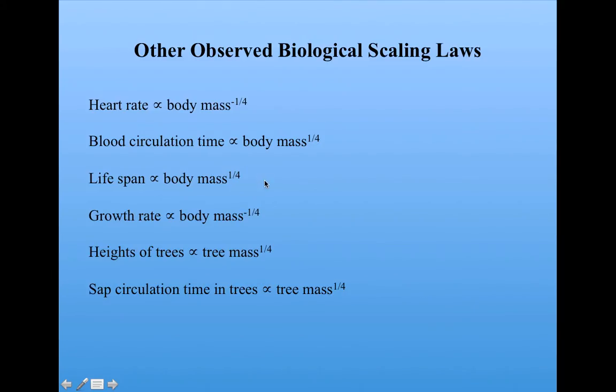Interestingly, scientists have observed other biological scaling laws that have a four in the denominator of the exponent. Heart rate scales like body mass to the minus one-fourth, that is, the lower your body mass, the higher your heart rate. Blood circulation time scales with body mass to the one-fourth. Lifespan scales with body mass to the one-fourth. What's going on with this one-fourth or three-fourths exponent?